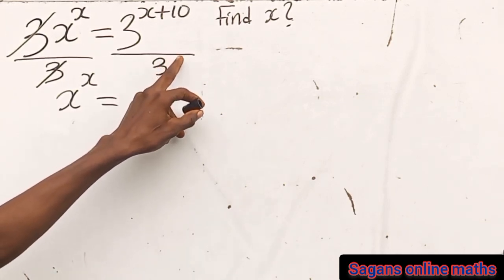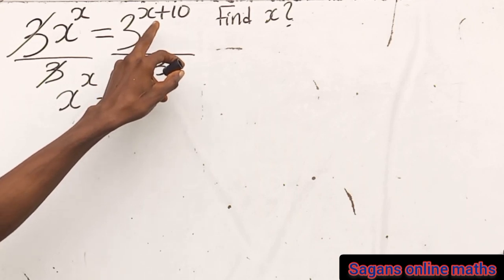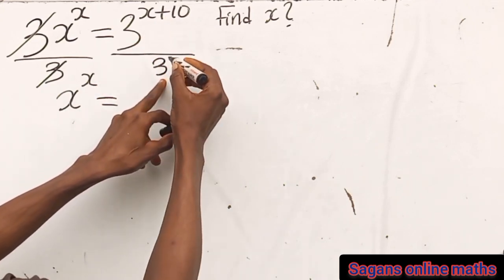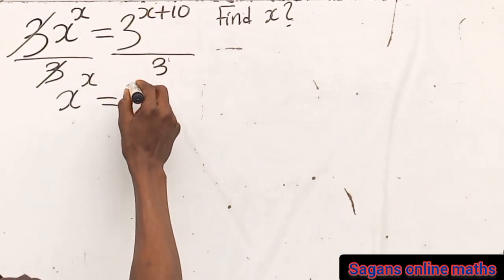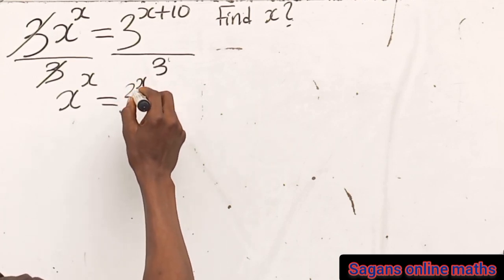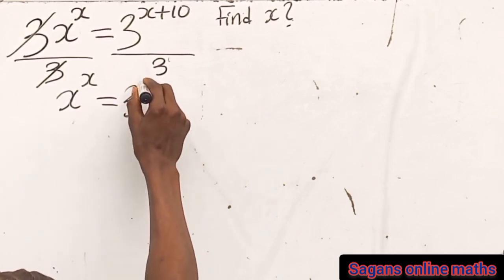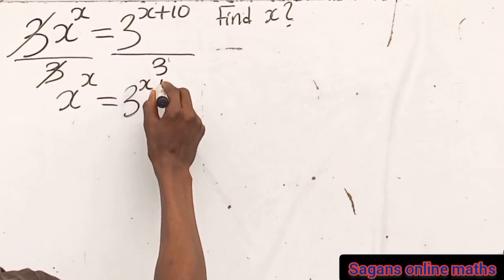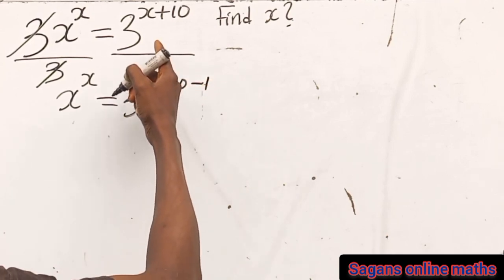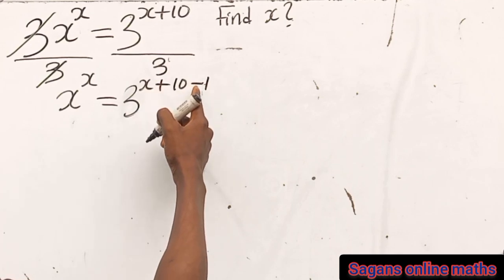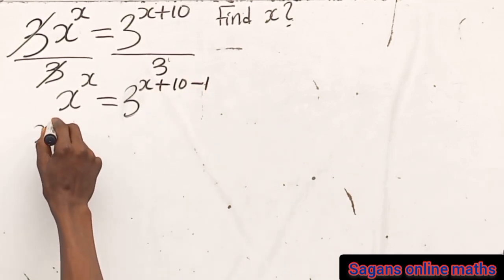Now by one of the laws of indices, when you have a division, with the same base — this is the base and this is the exponent — since the bases are the same, we subtract the indices. So we get 3 raised to the power of x plus 10 minus 1, because you have minus 1 here.